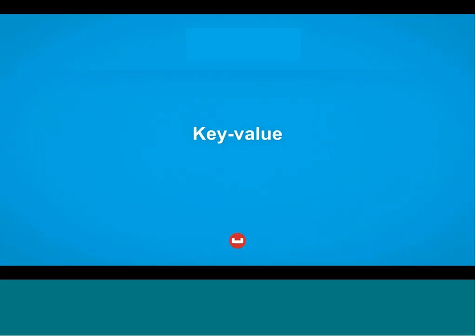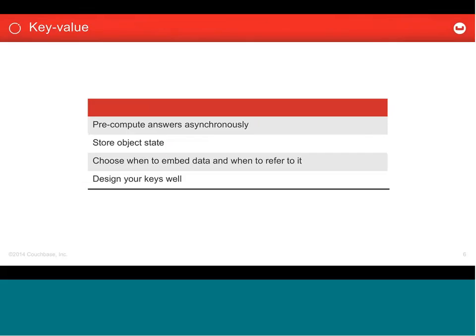Let's start off with looking at key value. When you're storing documents in a document database in a key-value fashion, you have one index — the key that you're storing the document with. Instead of treating the database as a great resource of answers you can piece together whenever you want, what you're doing is pre-computing answers, storing them, and then pulling them out when you need them.